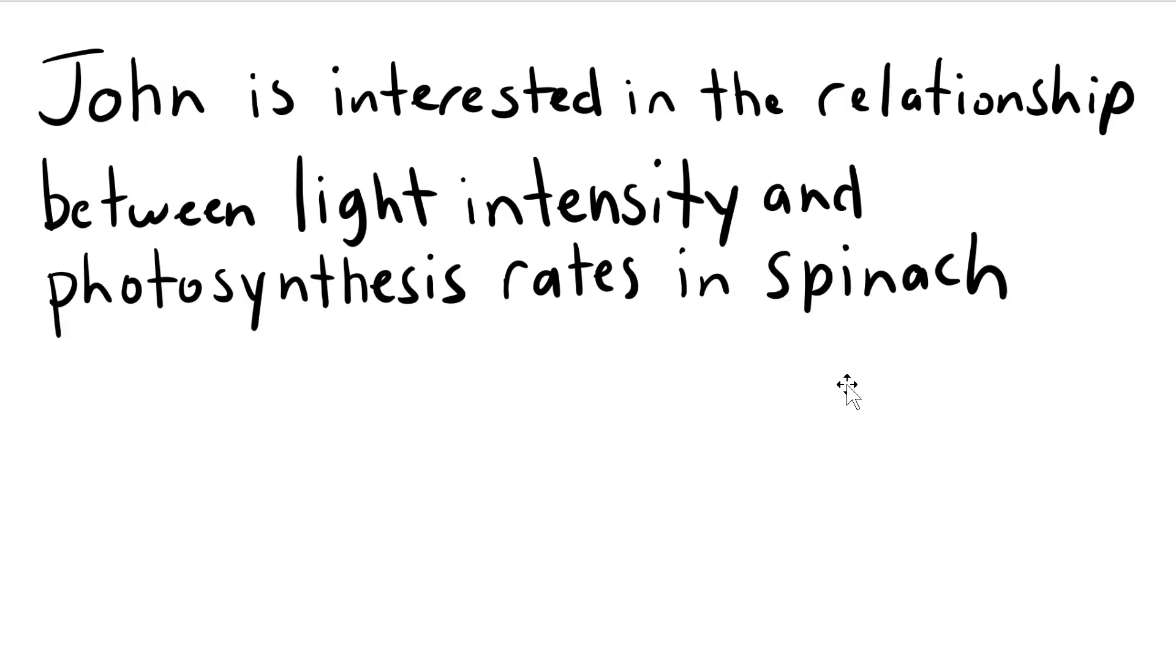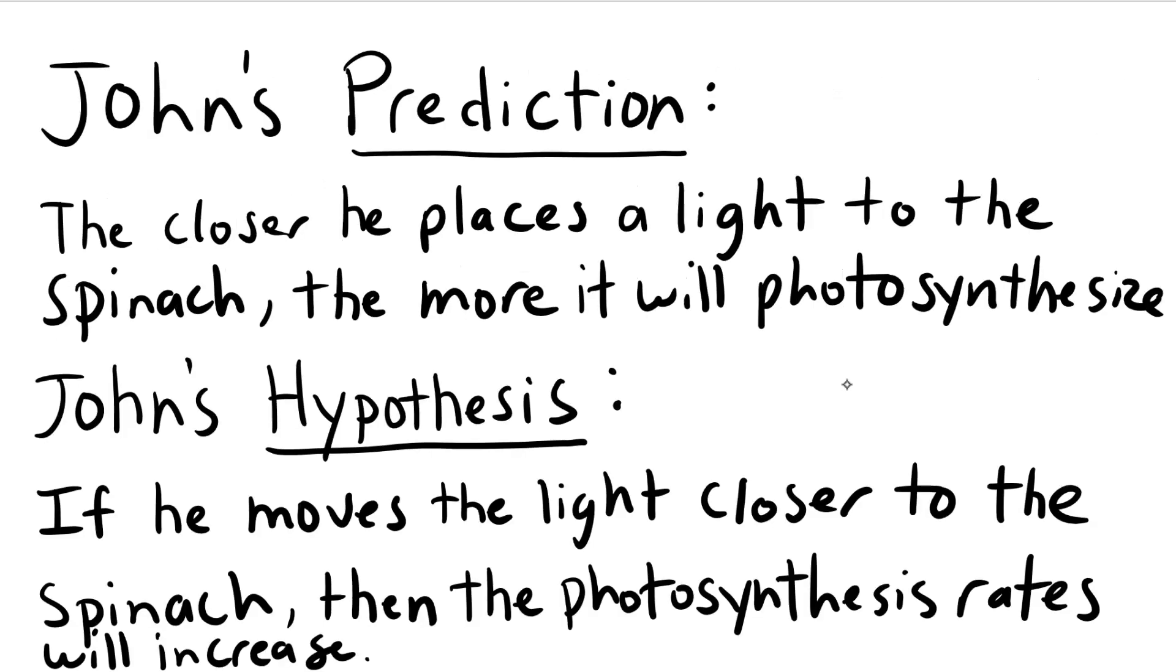Here is the experiment that John designed. We're working with photosynthesis—he is curious about the rates of photosynthesis. He's learned recently about photosynthesis, which is the process by which autotrophs convert solar energy into stored chemical energy. He has a question about the relationship between the amount of solar energy (that is, the light intensity) and how fast the rate of photosynthesis reactions occur. He's made a prediction, shown there. He's made a hypothesis. The hypothesis is shown there. So now we have to design the experiment and see what we can get out of it.